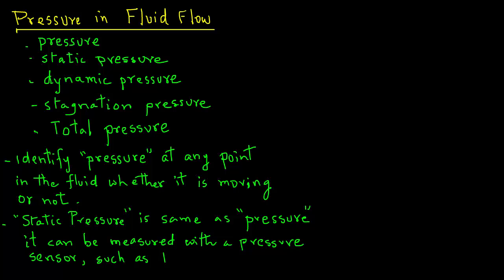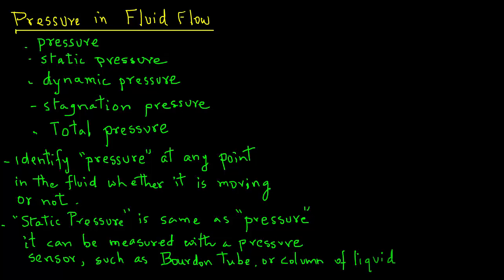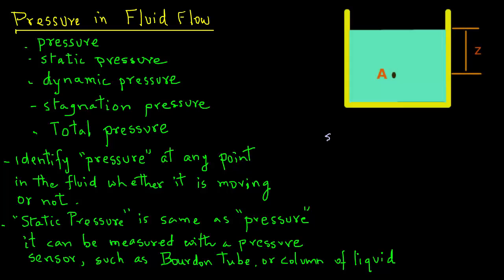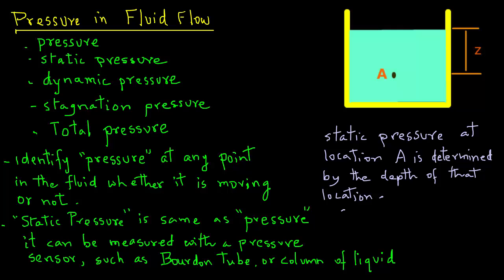Static pressure can be measured with a pressure sensor, such as a Bourdon tube or a mercury column. Here we have a tank with a certain fluid — let's say it's water — and we are interested in determining the pressure or static pressure at location A. We can determine that pressure if we know the depth of that location A in the tank from the top surface of water.